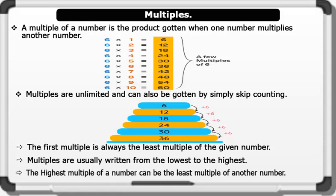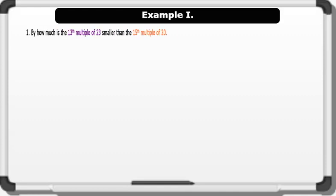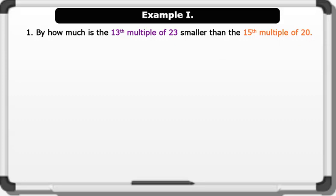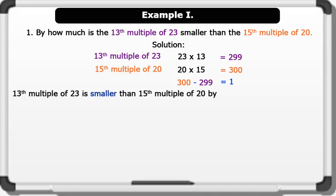It is important to note that the first multiple is always the least multiple of the given number. Multiples are usually written from the lowest to the highest. The highest multiple of a number can be the least multiple of another number. Example 1: By how much is the 13th multiple of 23 smaller than the 15th multiple of 20? Solution: the 13th multiple of 23 is 23 multiplied by 13, which equals 299. The 15th multiple of 20 is 20 multiplied by 15, which equals 300.